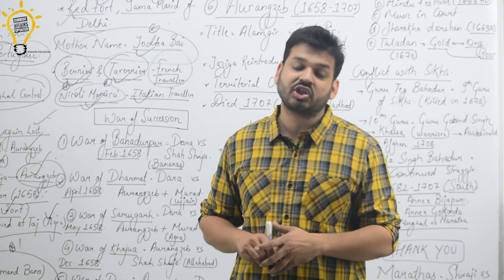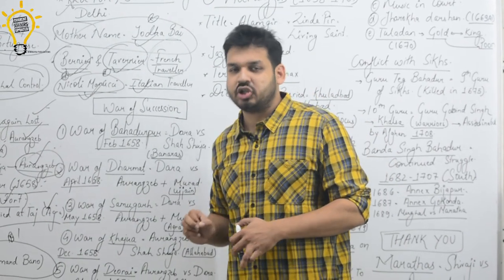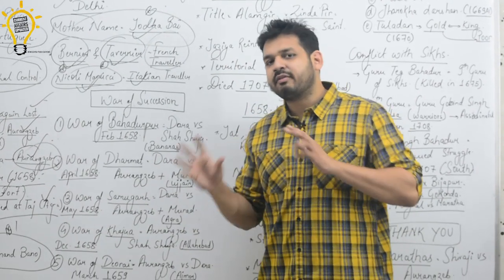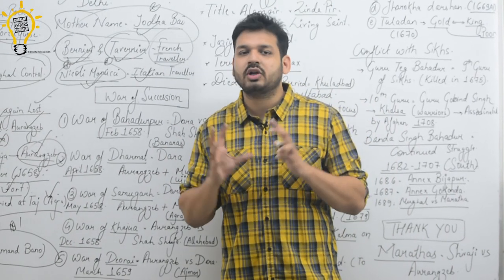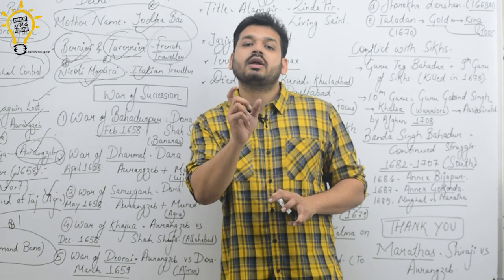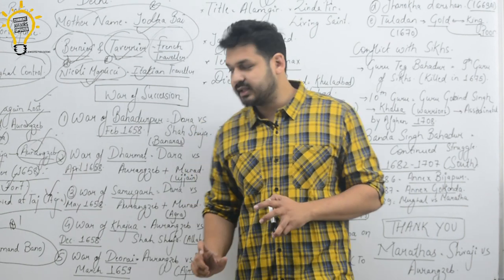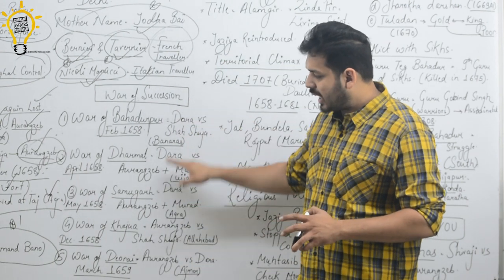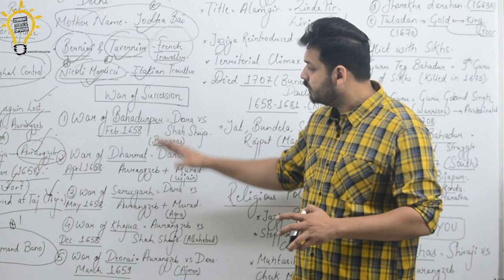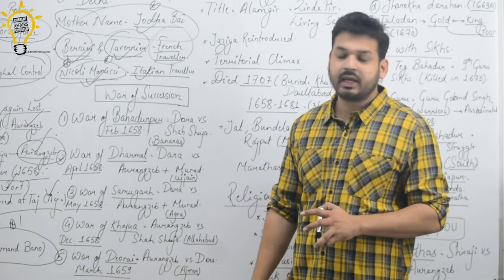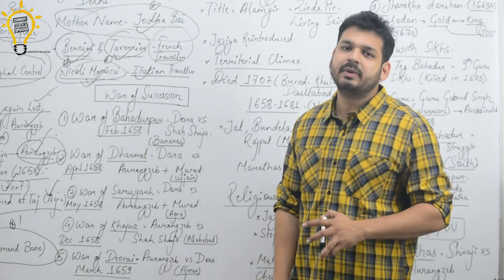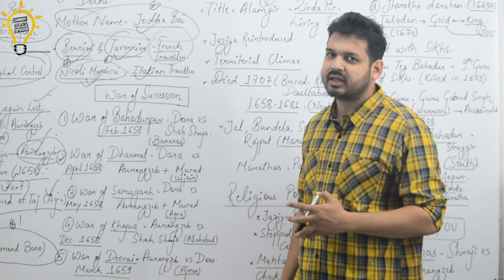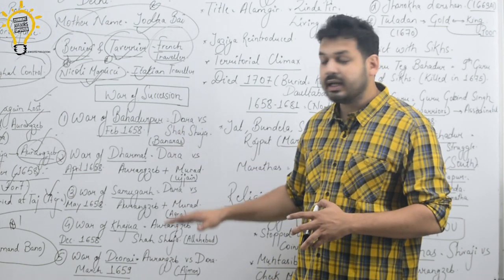The most important question is the war of succession. The war of succession was between the four sons, and finally Aurangzeb would be the winner. The wars should be arranged in chronological order. There are four or five wars that can be arranged chronologically, even by month.